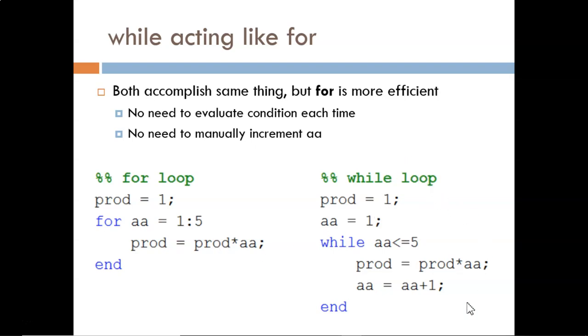This is one way we could accomplish the same thing with a while loop. Here, we manually increment AA each time through the loop, and then we use this condition to check if AA is not bigger than 5.